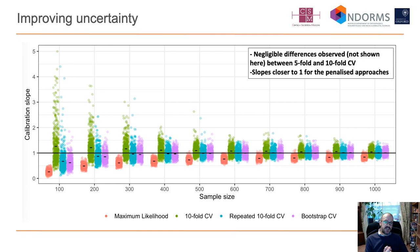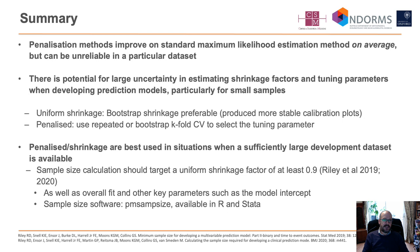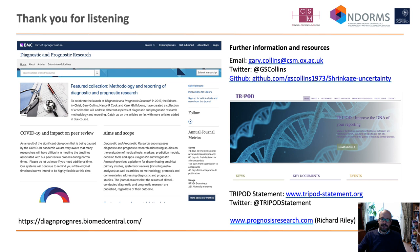What can we do to improve uncertainty? We can look at repeated ten-fold cross-validation or bootstrapping the cross-validation process — not new ideas, but rarely seen in clinical papers. This makes a considerable improvement in reducing uncertainty, and subsequently in the estimation of the calibration slope. To summarize, three take-home messages: penalisation methods do improve on standard maximum likelihood estimation on average — not a surprise — but they can be quite unreliable in any one particular dataset, more pronounced in small sample sizes where there's large uncertainty in estimating shrinkage factors or tuning parameters. Ultimately, we should only develop models on datasets that are sufficiently large, and we now have guidance on how to do that.